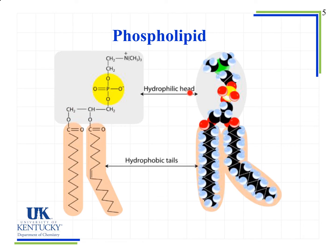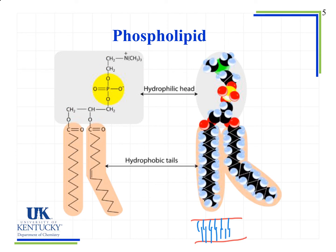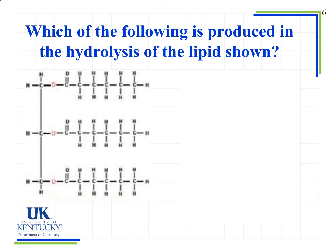The hydrophobic tails are nonpolar — 'hydrophobic' means fear of water, which means nonpolar. The hydrophilic head contains the phosphate group — 'hydrophilic' means love of water, and since water is polar, these are the polar ends of the phospholipid. In the cell membrane's phospholipid bilayer, the polar heads face the outside, and the nonpolar hydrophobic tails face inward, interacting with one another.